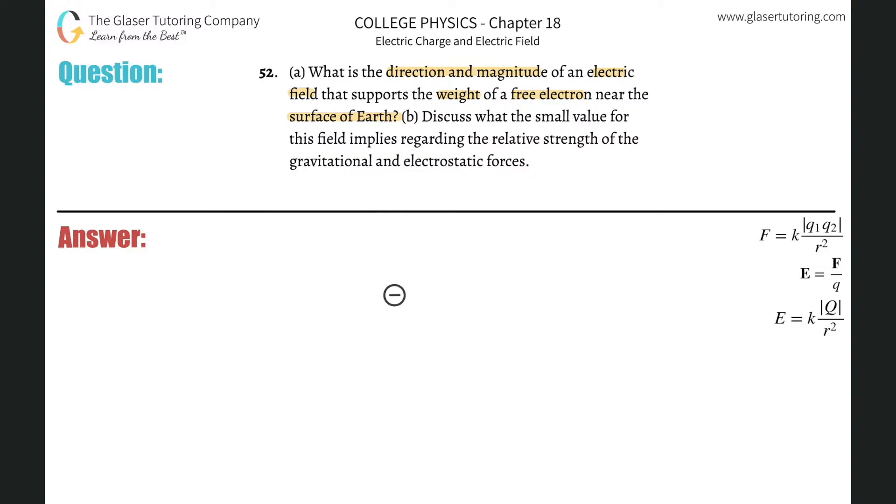Now, remember, and I've discussed this concept in prior problems, anytime we draw an electric field, let's say we have a uniform electric field here pointing from left to right. Electric field lines always point from positive objects to negative objects, okay?